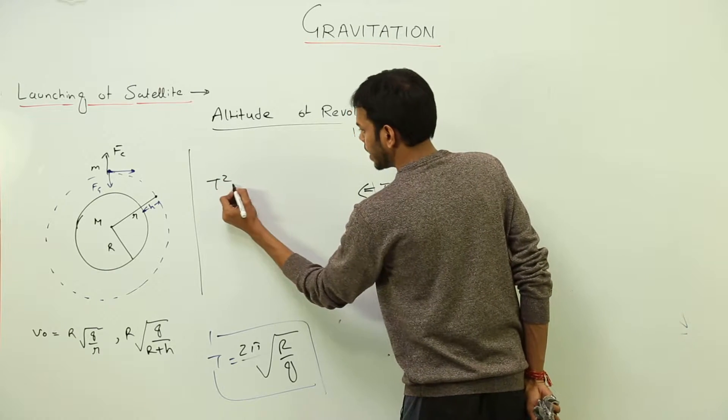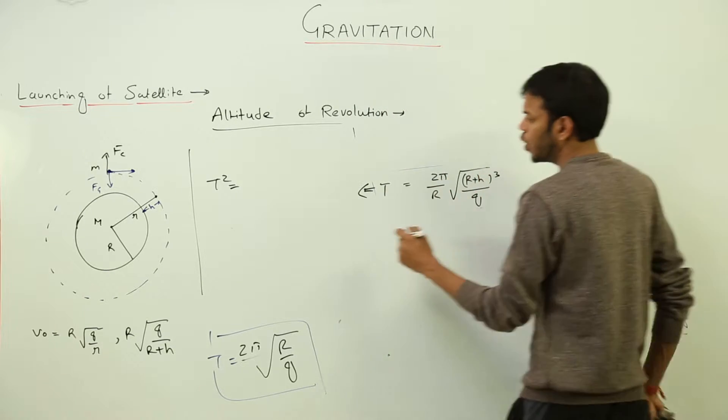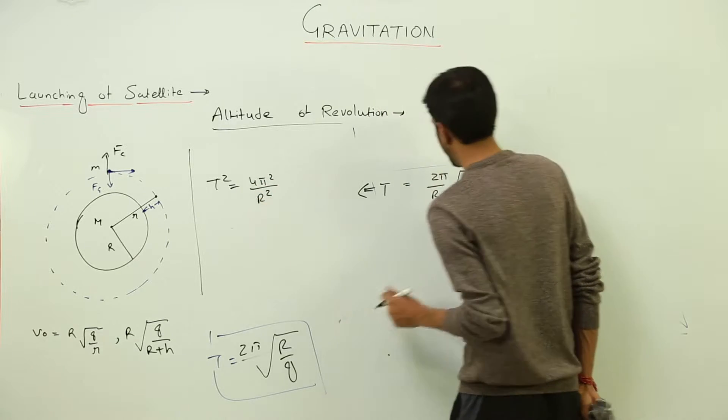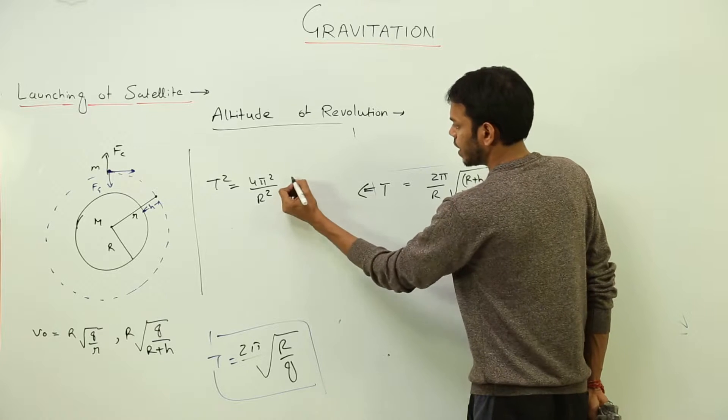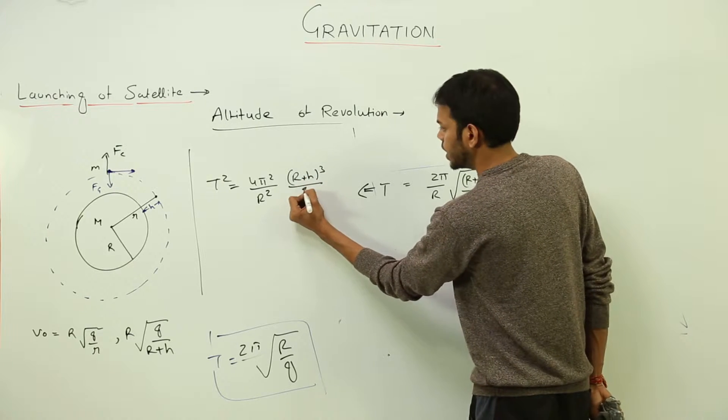T square is equal to, because we have already figured out the value of time period, 4 pi square upon r square and this whole root disappears, multiplied by r plus h whole cube upon g, right?